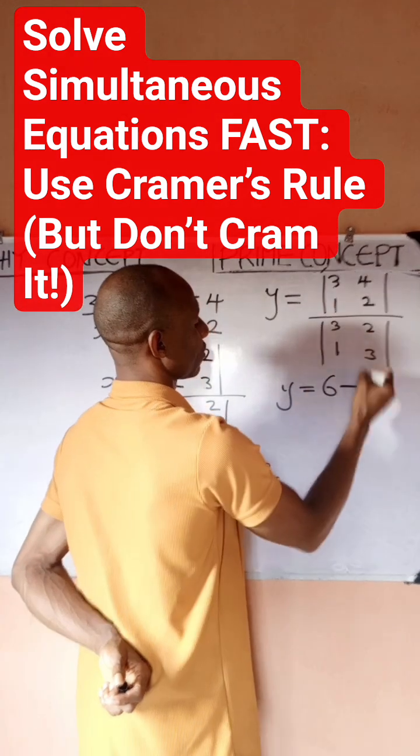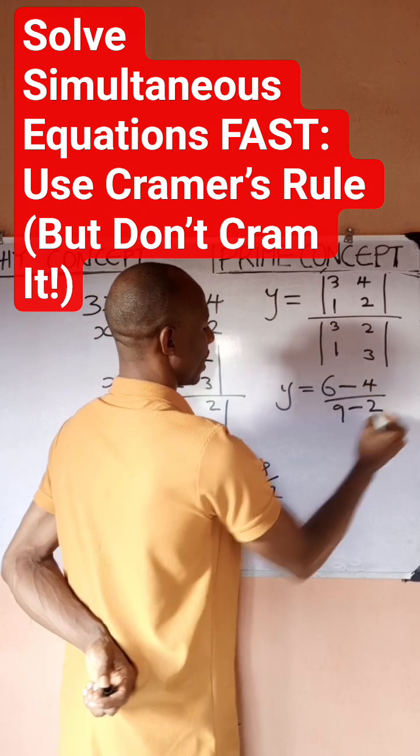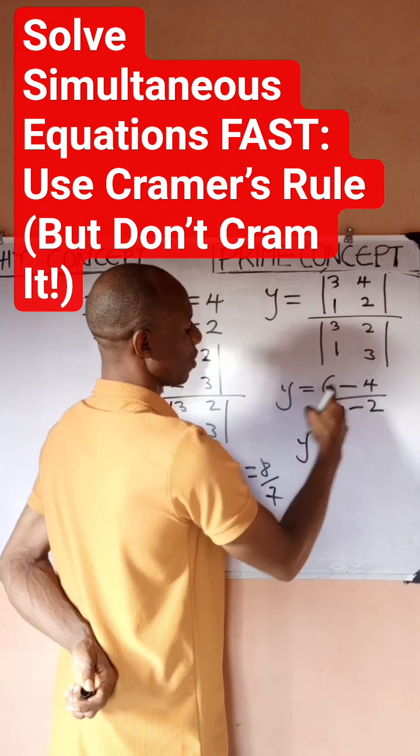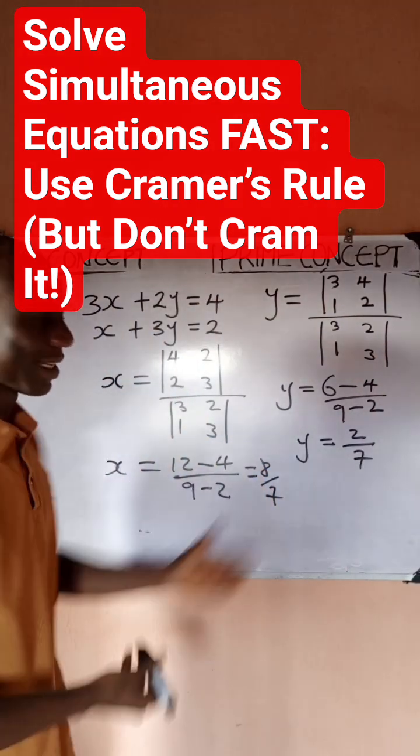It's simply going to be this times this which is 6 minus 4, all divided by this times this which is 9 minus 2, and my y is going to be what, this 2 divided by 7. So I've gotten the values for my x and my y.